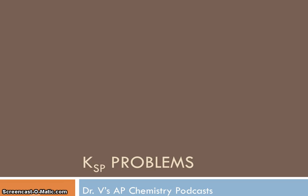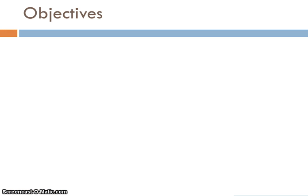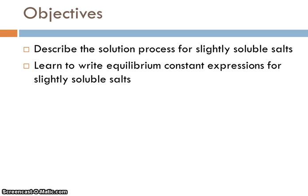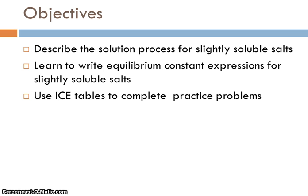Hi, and welcome to Dr. V's AP Chemistry podcast. Today we're talking about KSP problems. I'd like to very briefly talk about the solution process when these slightly soluble salts dissolve in water, teach you how to write equilibrium constant expressions for these slightly soluble salts — these are called KSP expressions — and we'll use ICE tables to complete the practice problems.